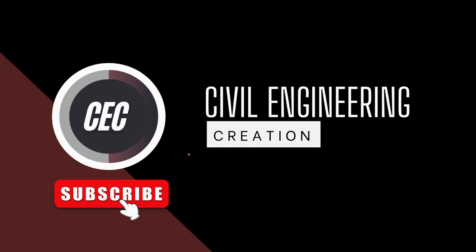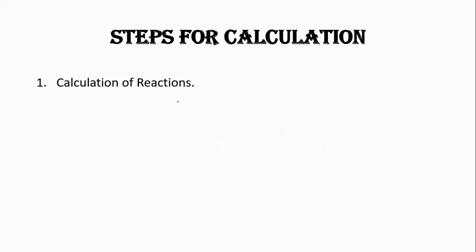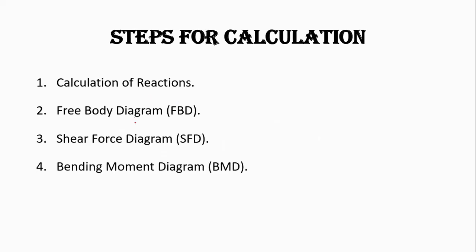Welcome to my YouTube channel Civil Engineering Creation. Today we will solve a cantilever beam with uniformly variable load. We have a cantilever beam with triangular loading of 2 kilonewton per meter acting on the beam up to 3 meters. First we will calculate the reaction forces, then we will draw the free body diagram, shear force diagram, and bending moment diagram.